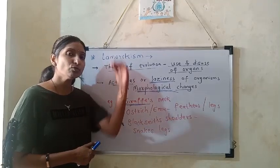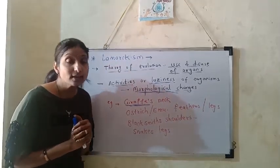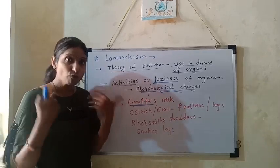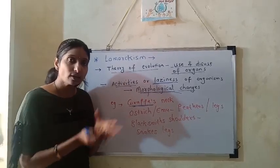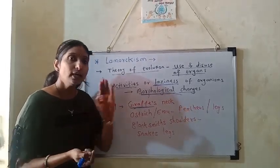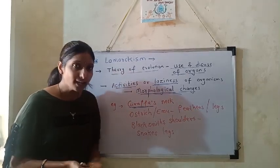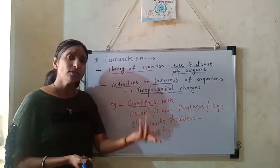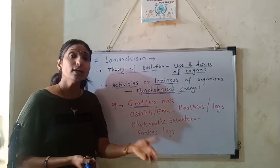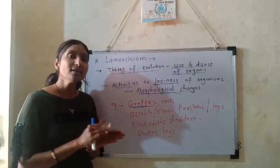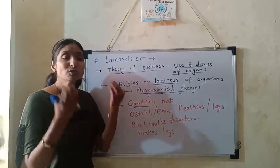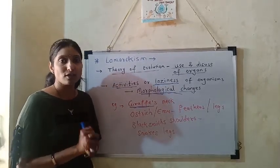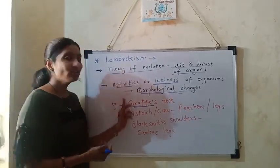If a person straightens their curly hair, their child will still have curly hair, because straightening hair is a physical process with no genetic change. What Lamarck said — that evolution takes place due to acquired characters — is not correct, because physical activities cause only morphological changes, not genetic changes.